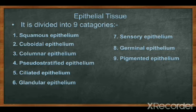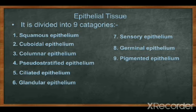The types are: squamous, cuboidal, columnar, pseudostratified, ciliated, glandular, sensory, germinal, and pigmented. These are basically nine types, but in the NCERT book only four types are given. So from the nine we will learn the four or five that are in that book.